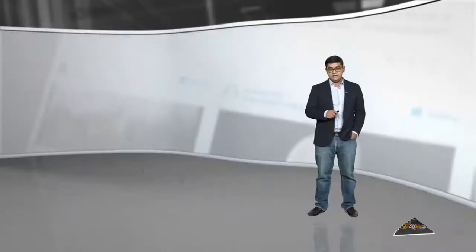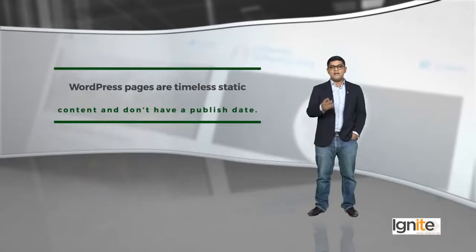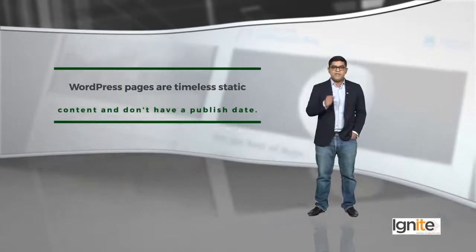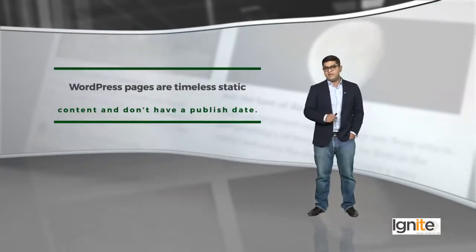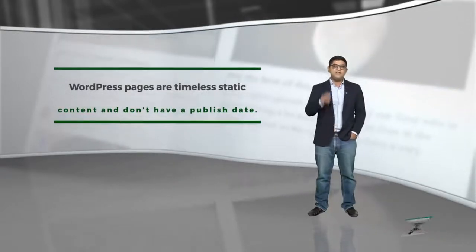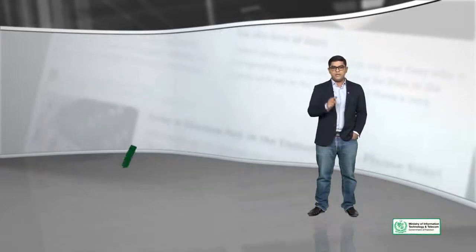WordPress pages are timeless content that don't have a published date. WordPress pages are not dynamic — they are static. Static ka matlab yeh hai ke is pe jo content hai, uske saath koi frequency attached nahi hai, koi time attached nahi hai. That is a basic way to understand the difference between WordPress posts and WordPress pages.